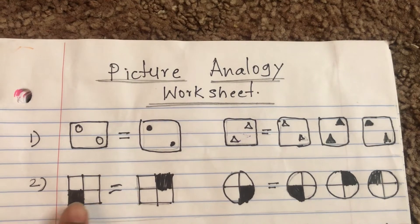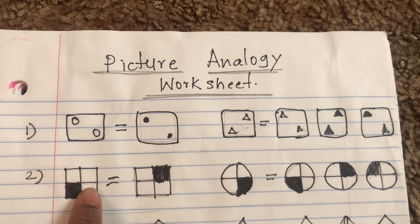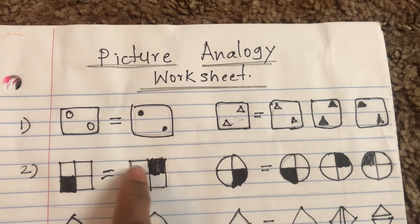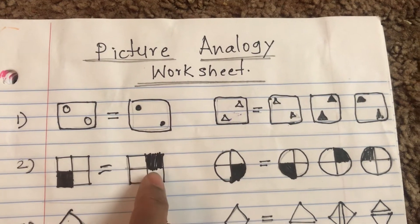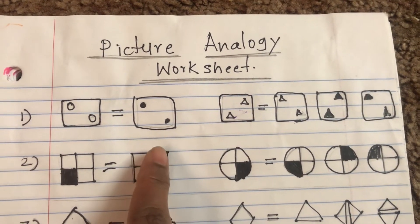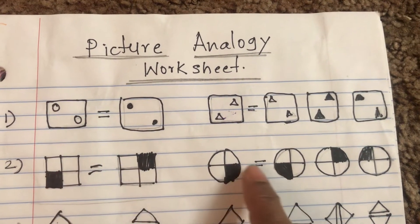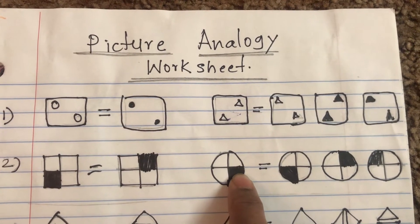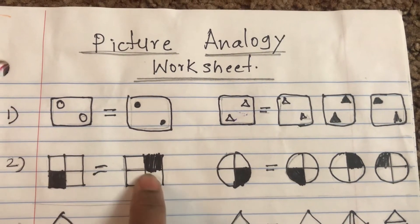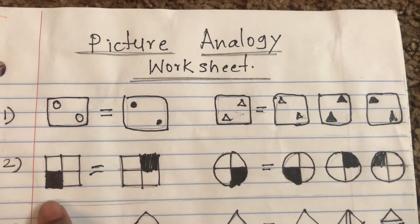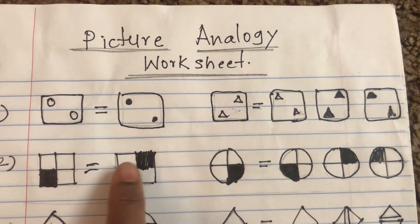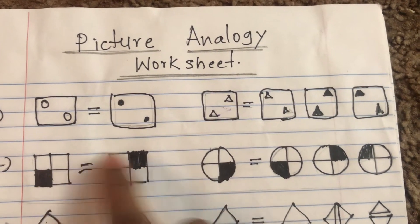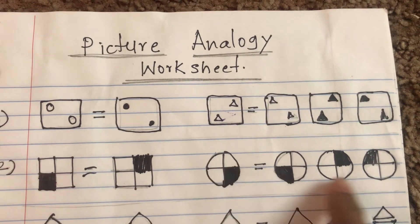For the second problem, I made a square divided into four equal squares with the lower-left corner darkened, followed by a big square divided into four squares with the top-right corner darkened. The association is that the darkened quadrant shifts from lower-left to upper-right. If we do the same with a circle divided into four quadrants with the lower-right quadrant darkened, we need to find the opposite shift — so the answer is the circle with the opposite quadrant dark.